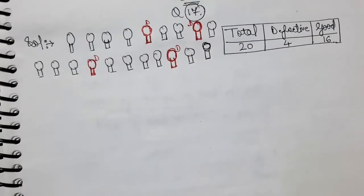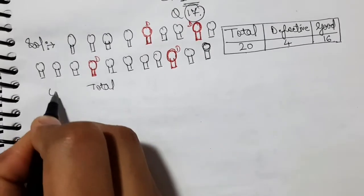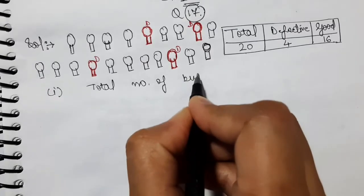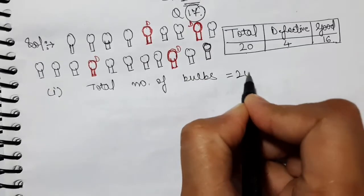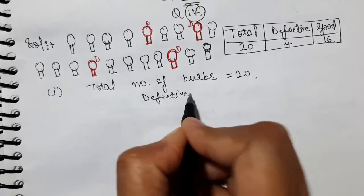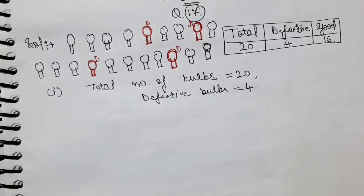First, let us write the total number of bulbs. We have total number of bulbs is equal to 20. Then, defective bulbs is equal to 4. And how many good ones are? 16.